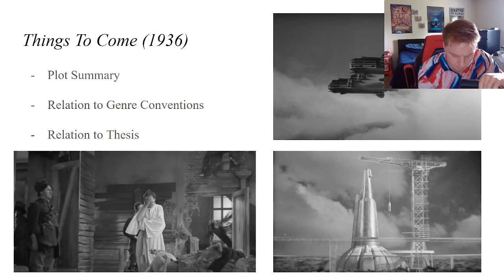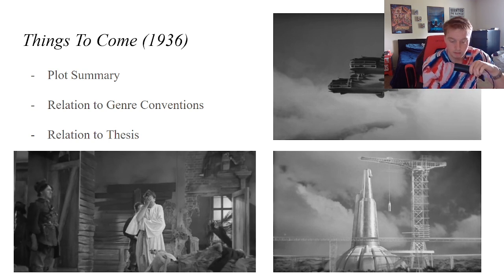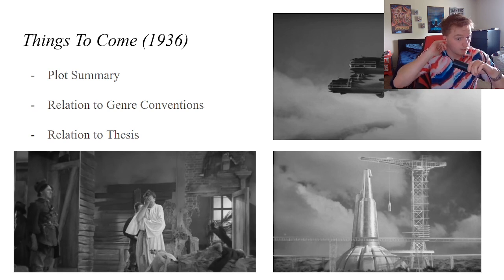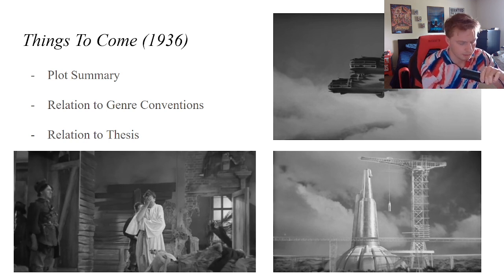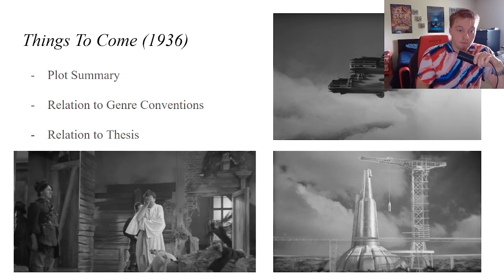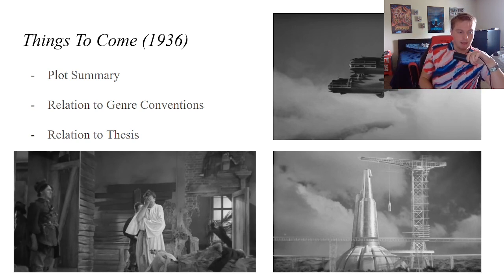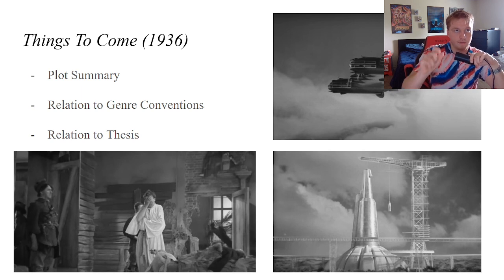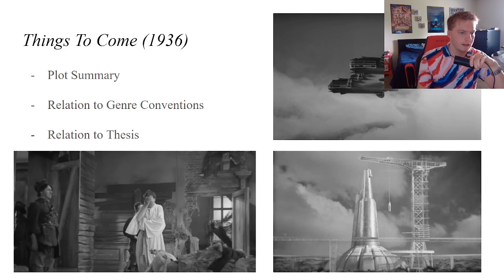I'm blanking on his name — Gordon? I don't remember. This character is seemingly from the future, but he's really from a company called something like Communications Inc. He comes to the middle part of the film — a town called Everytown in 1966 or 1970, post the beginnings of the war.